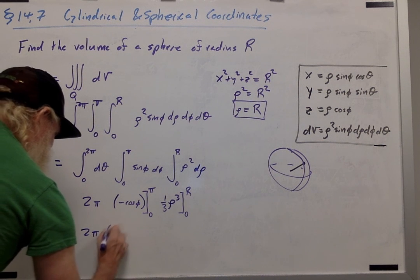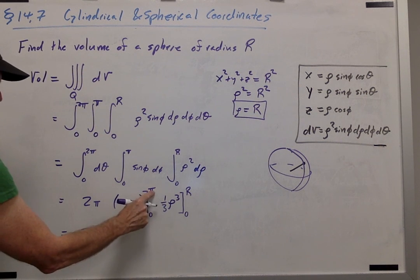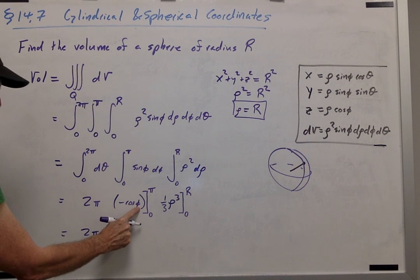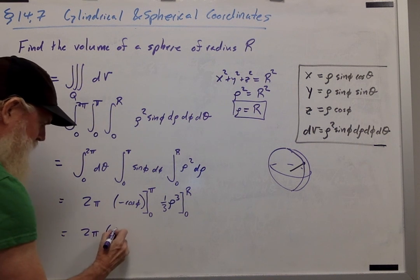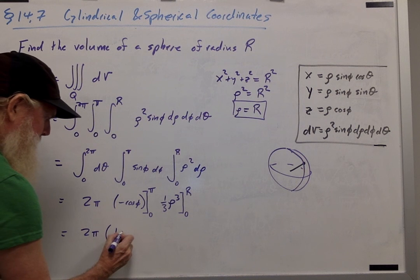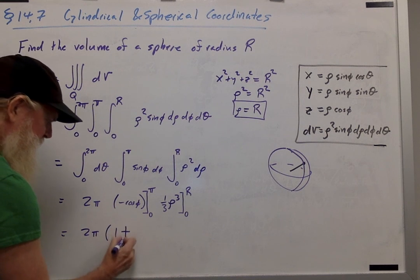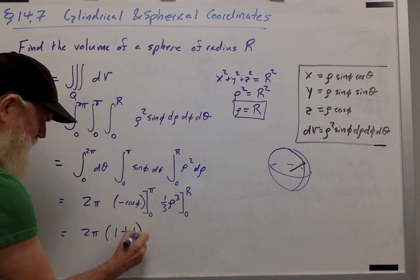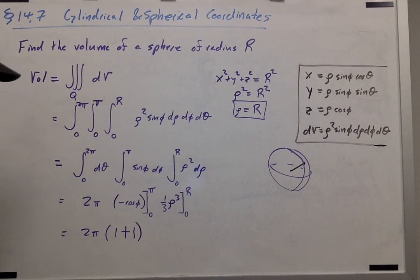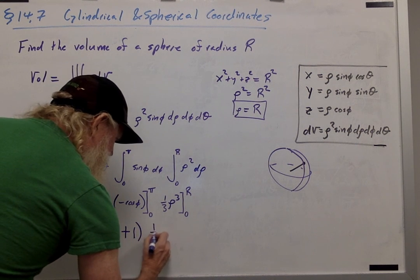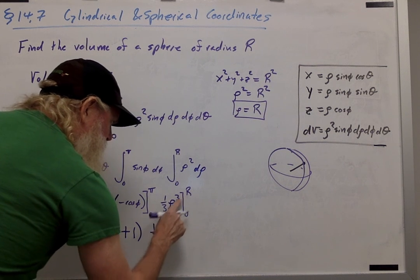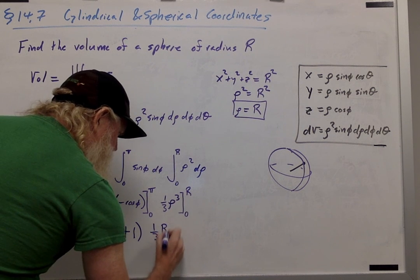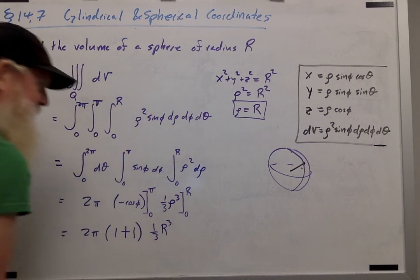So I get 2 pi times cosine of phi is negative 1, times another negative 1 is positive 1, minus a negative cosine of 0 is 1. So I get 1 plus 1 here. Substituting over here, I have 1 third big R cubed minus 0.